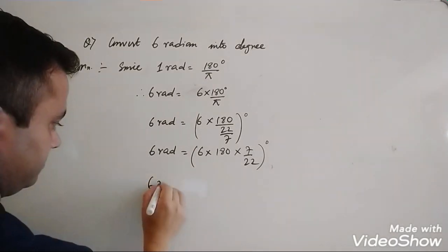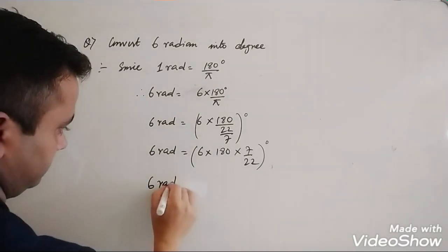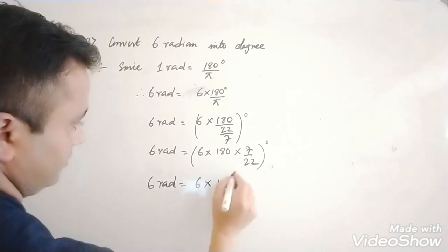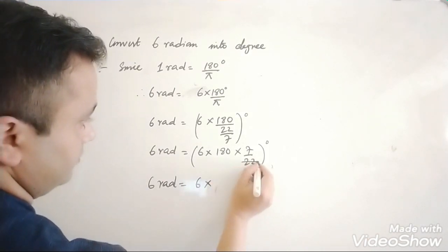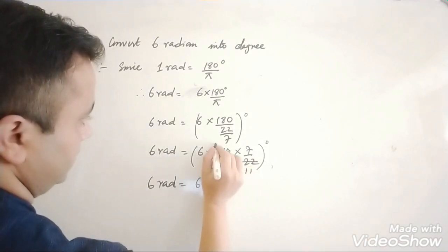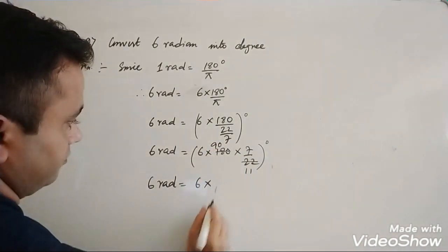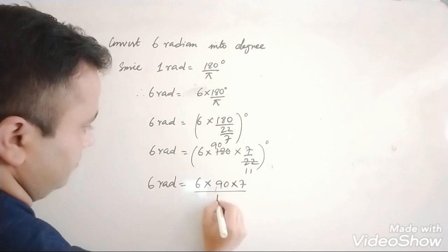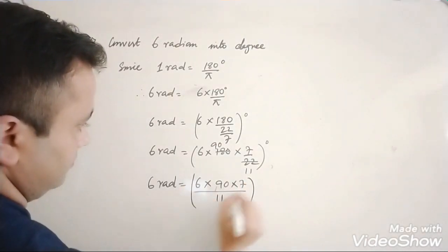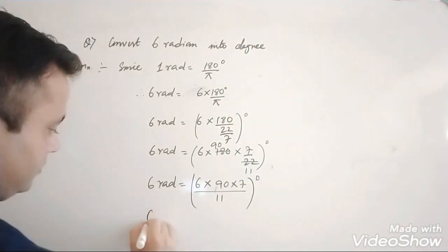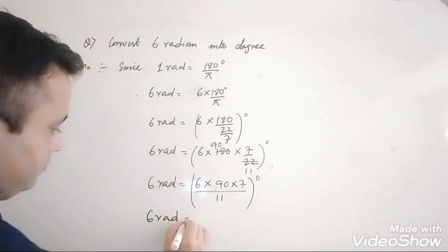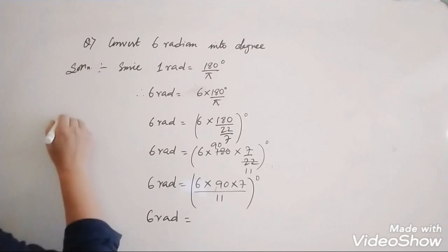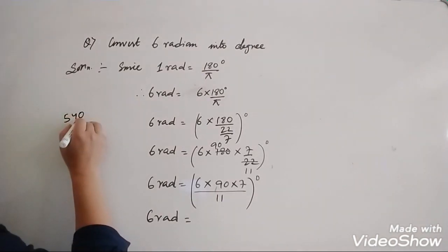Now 6 radians equals 6 into 90 into 7 divided by 11 degrees, after simplification. Computing 540 into 7 gives us 3780, so we have 3780 divided by 11 degrees.